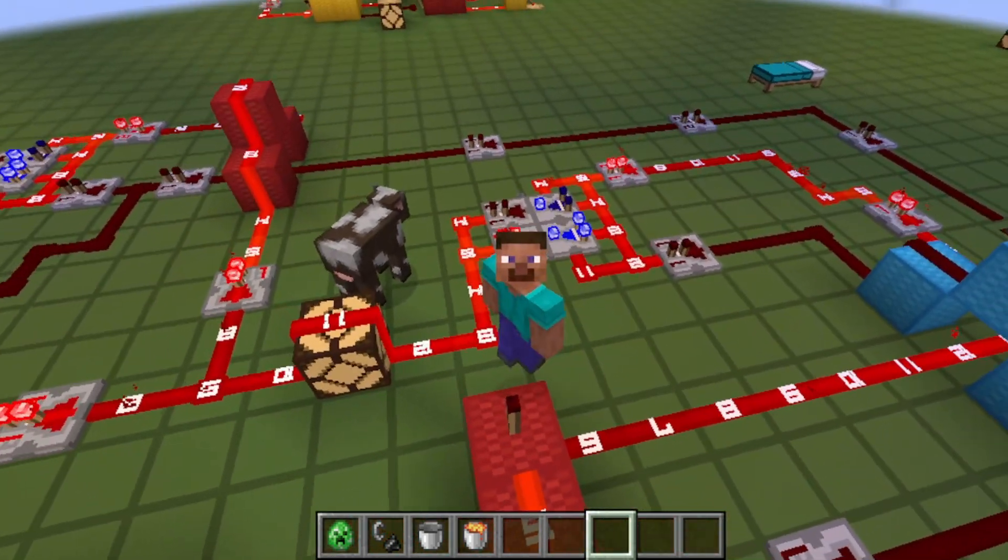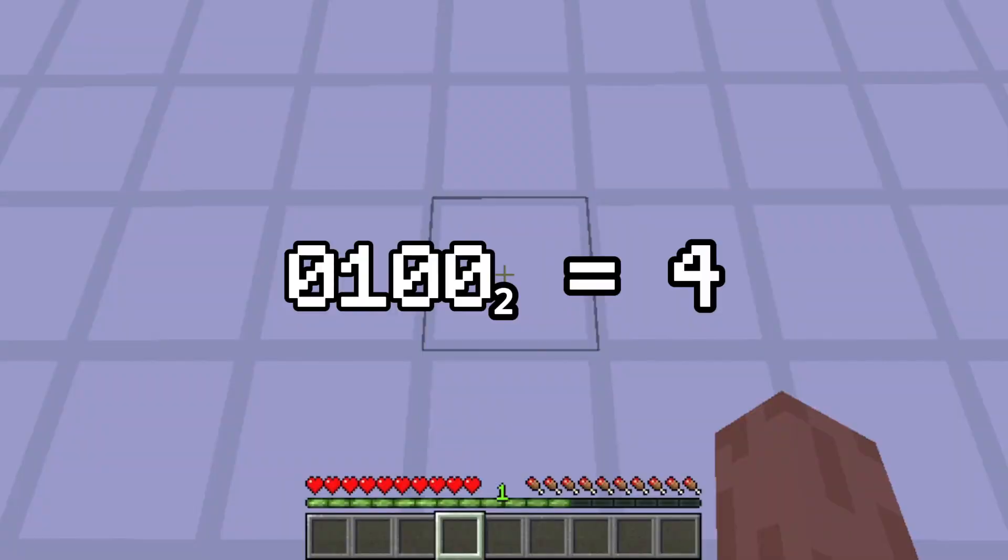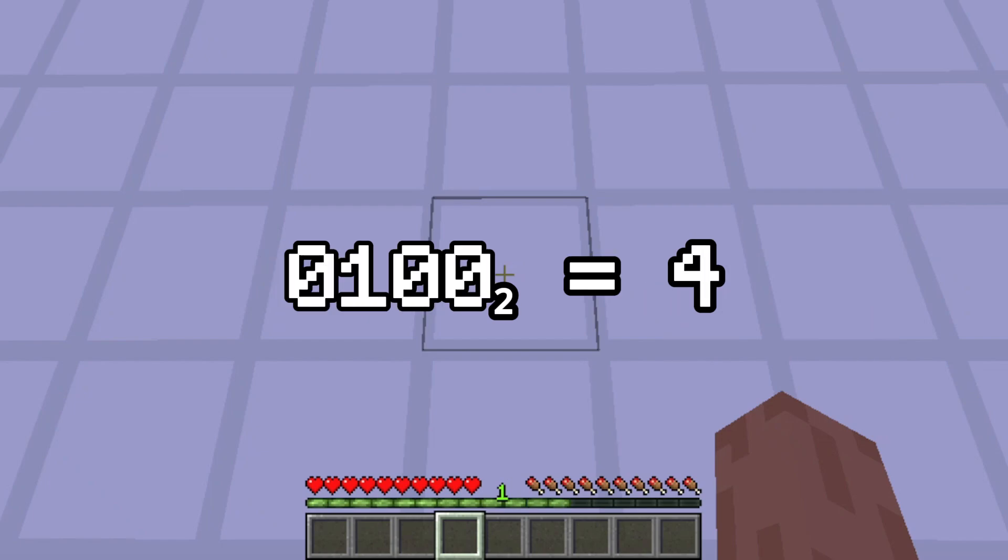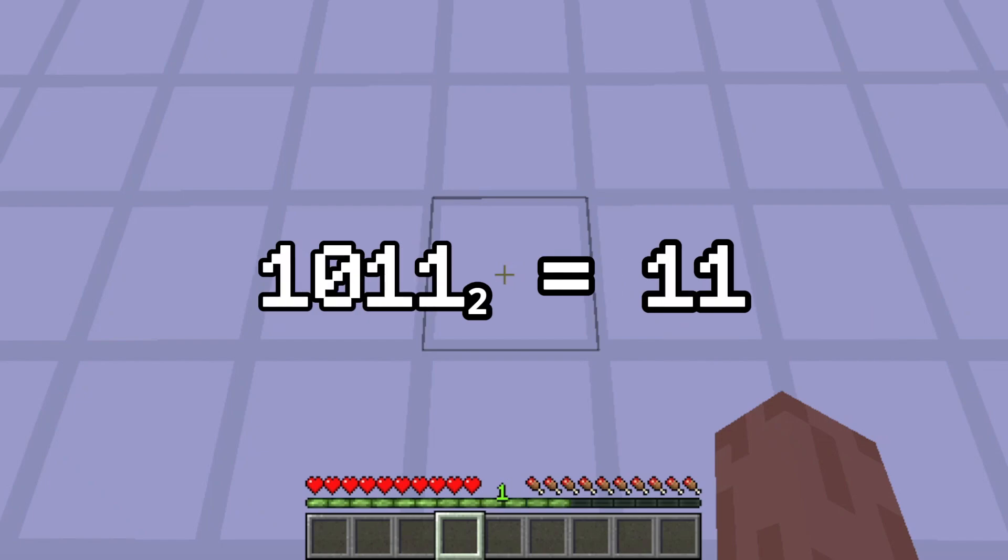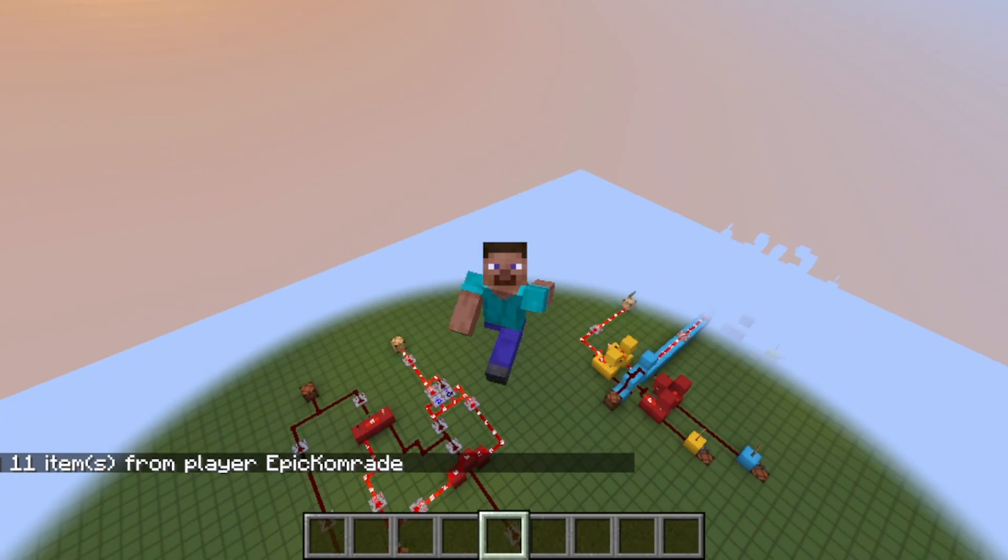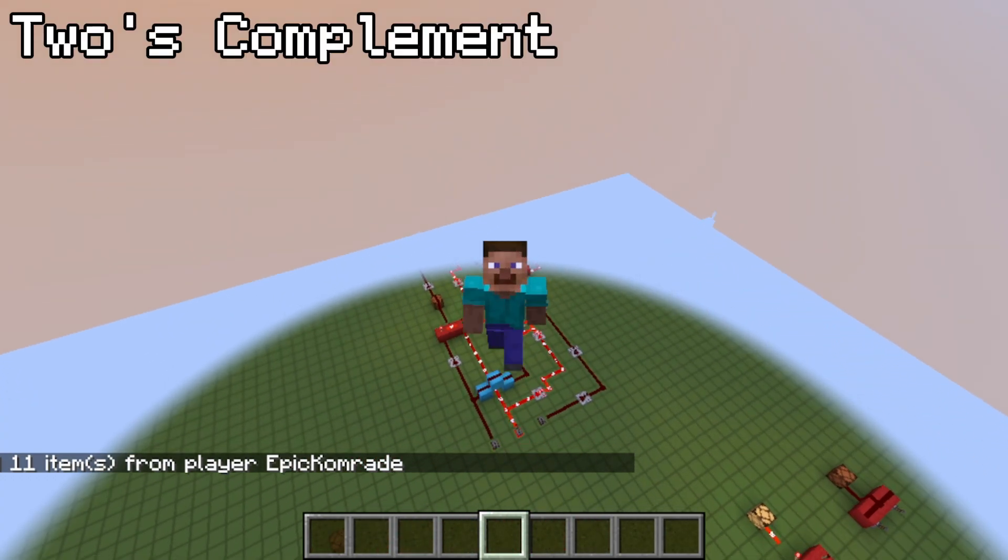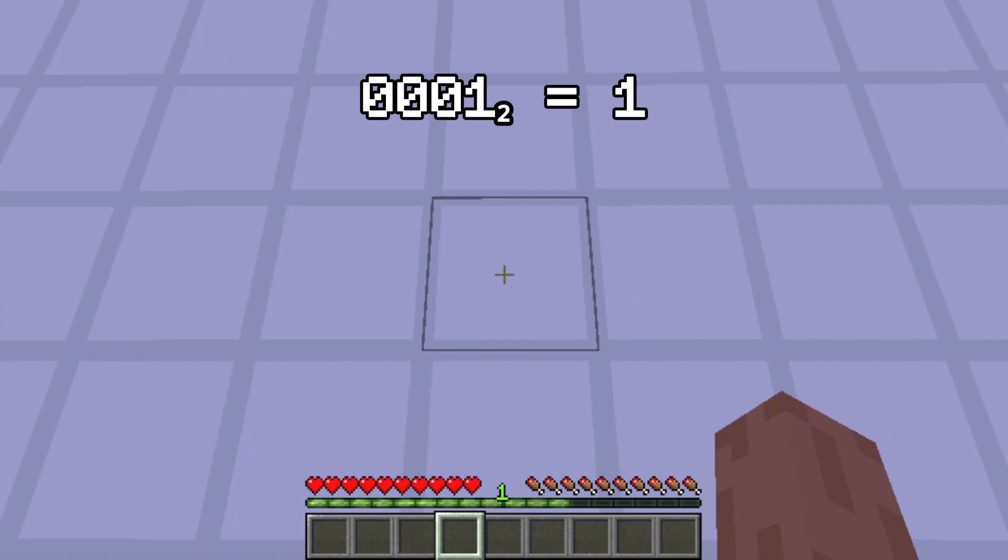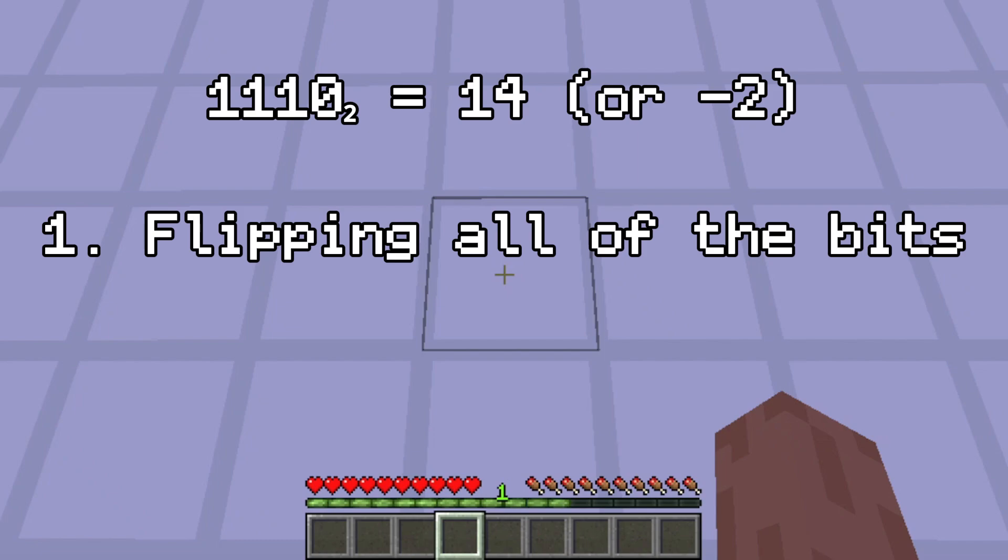What we basically did was turn 0100 into 1100. We basically inverted all the bits 1011, and added 1 to get 1100. We just derived 2's complement, which states that the negative of a number is the same as flipping all of the bits of the original and adding 1. With this, we can basically do subtraction using our ripple carry adder.